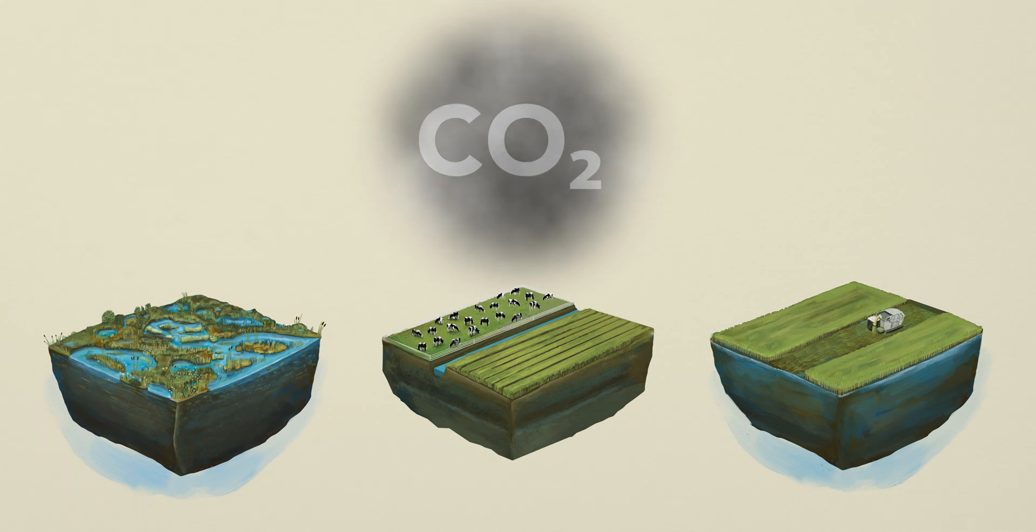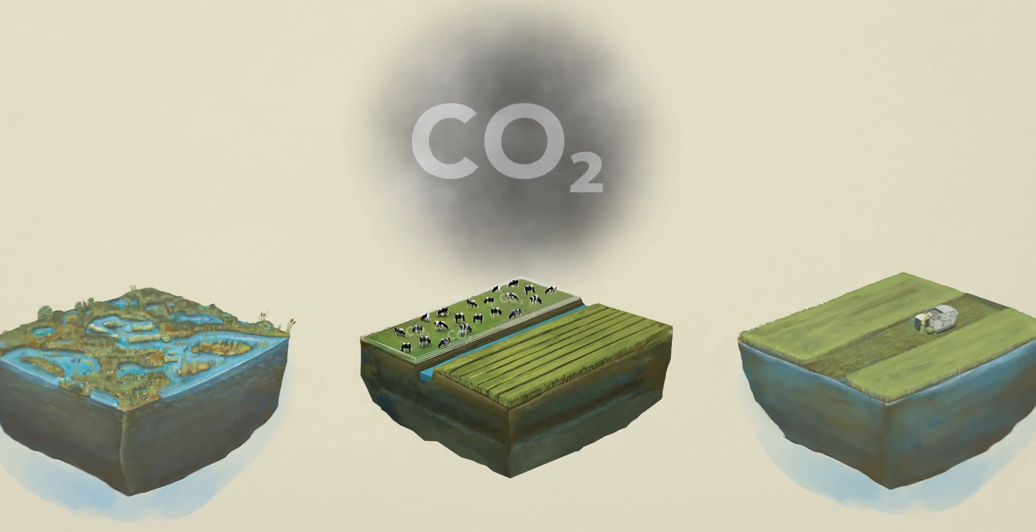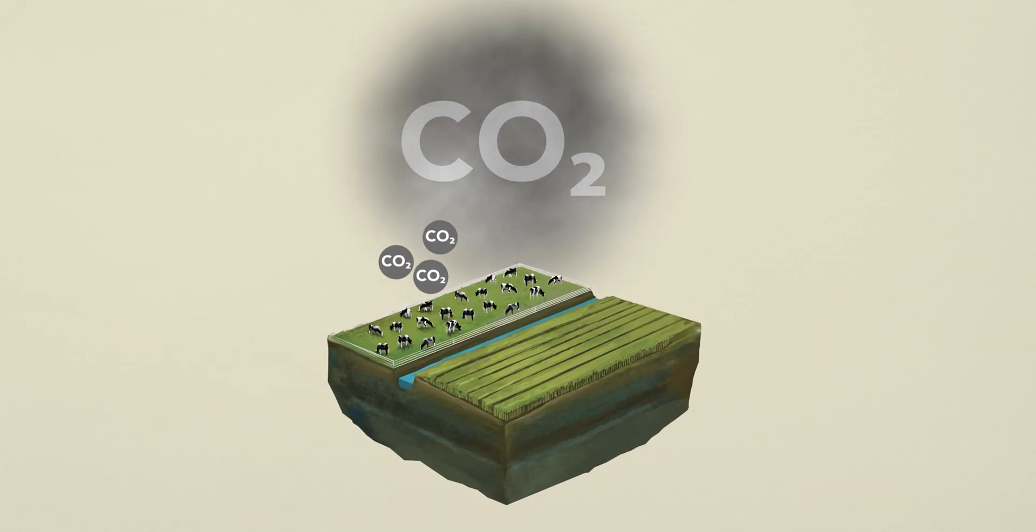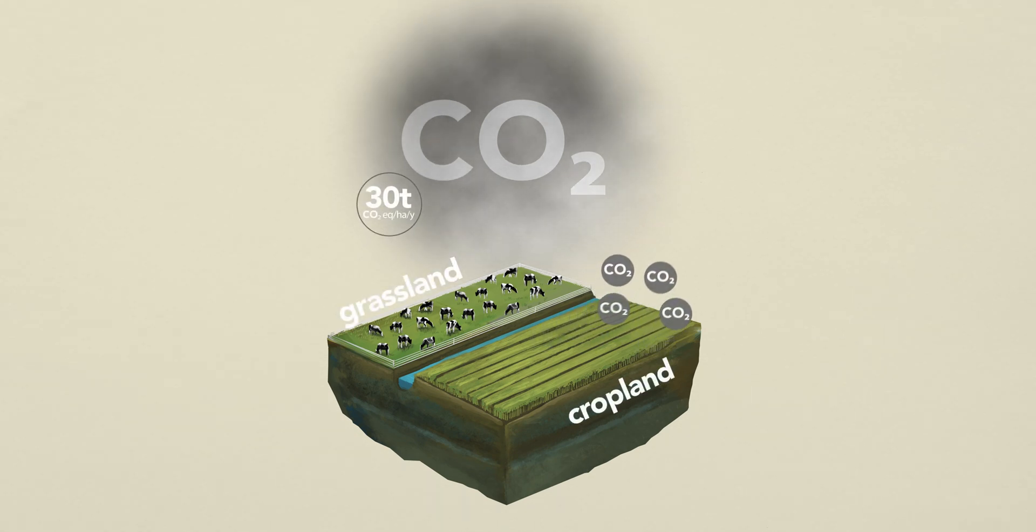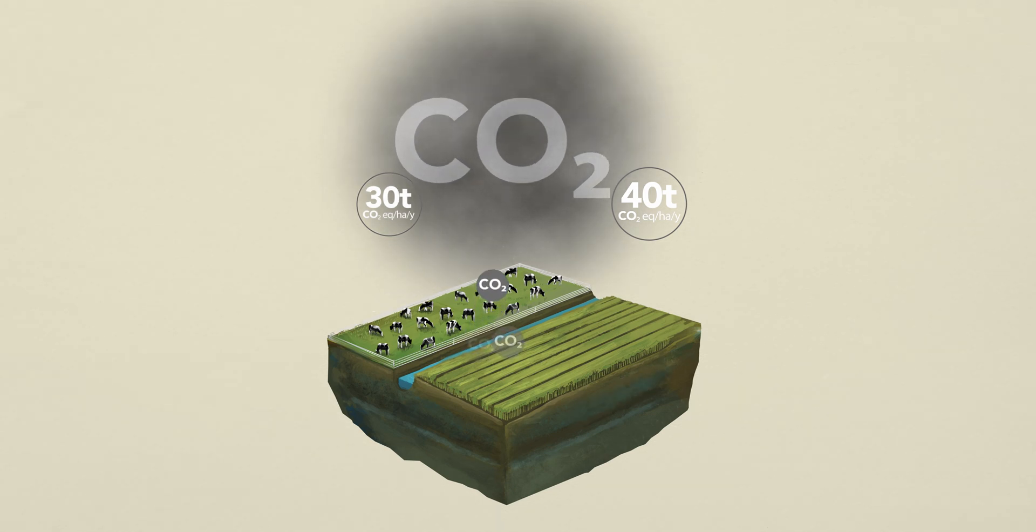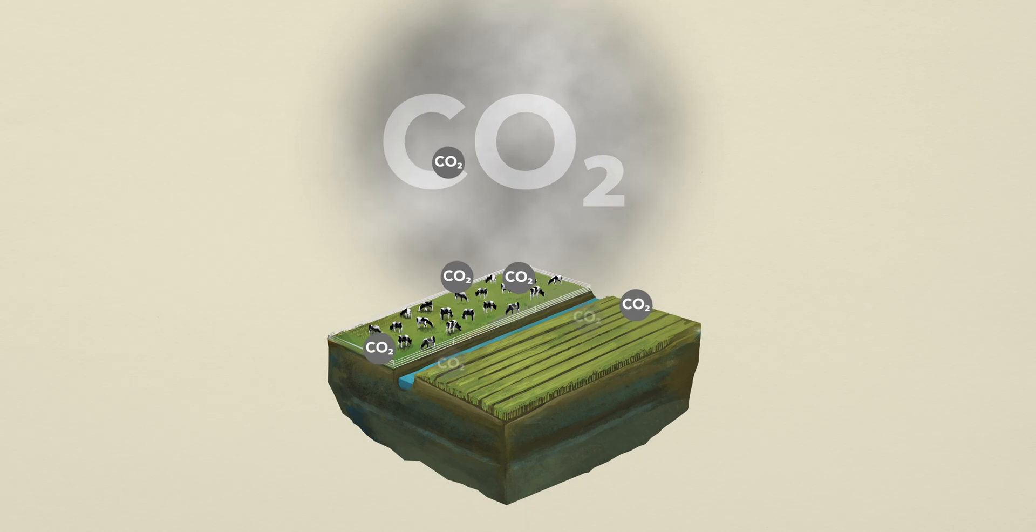Carbon dioxide emissions from peat degradation in drained peatlands under conventional agriculture, on average amount to 30 tonnes of CO2 equivalents per hectare per year for grassland and 40 tonnes per hectare per year for cropland. Drained peatlands will continue to add 30 to 40 tonnes of CO2 equivalents per hectare to the atmosphere each year.